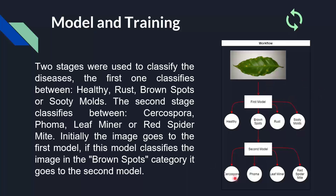If your microcontroller or computer can't handle too many classes, splitting them this way is a good approach. So, if the first model says it's a brown spot, the image goes to the second model, which classifies between circle spot, FOMA, leaf miner, and red spider mite.